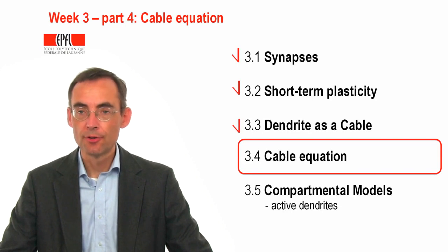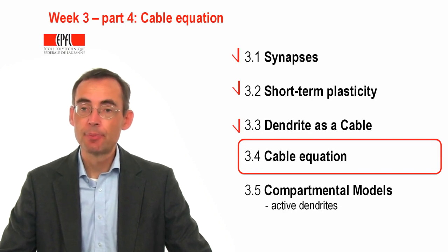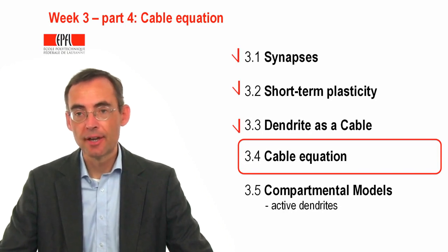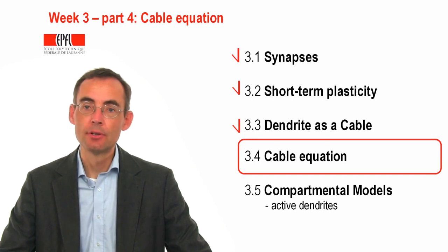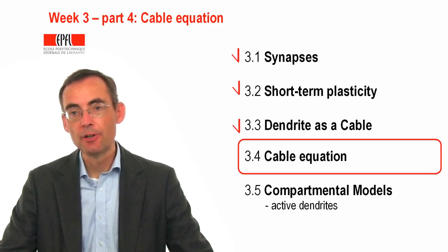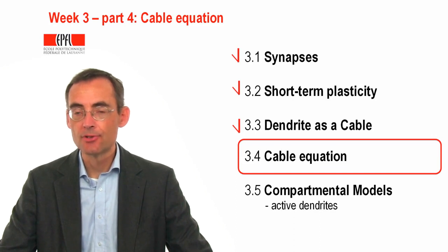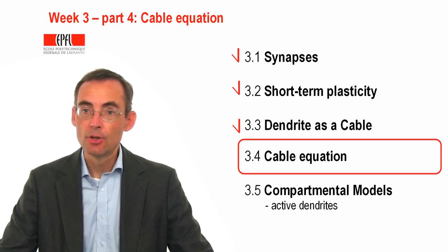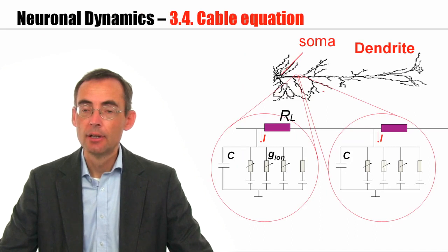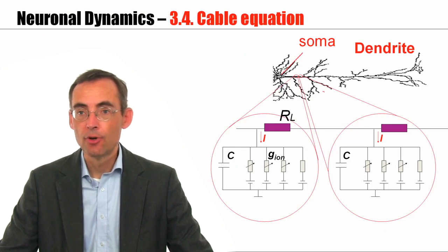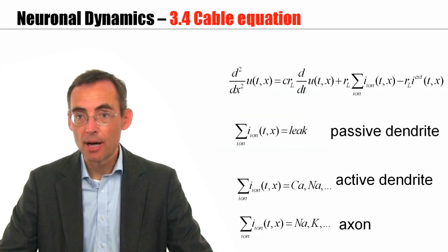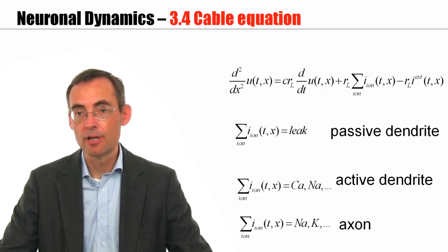Welcome to part four of the third week. In the previous part, I derived the cable equation. And I said that depending on what type of ion channels you put into the equations, you can get different behaviors. In the following, I would like to focus on the case of a passive dendrite.